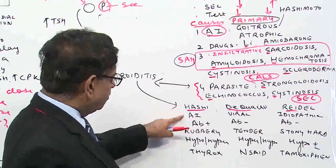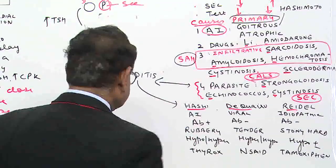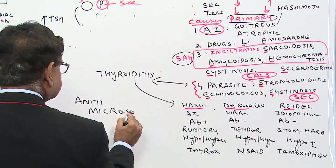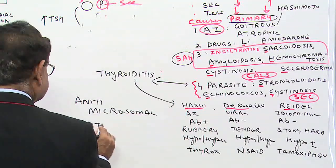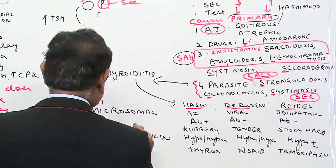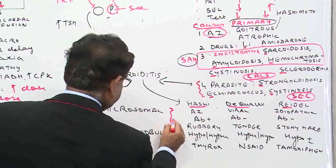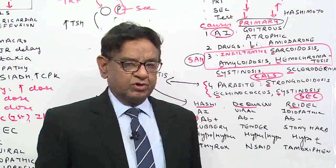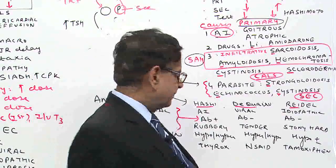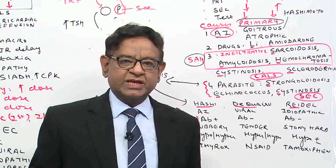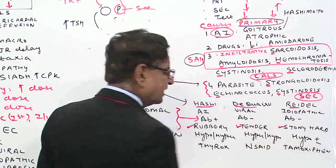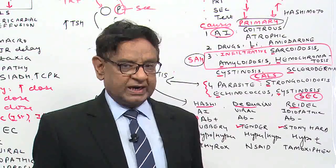Since Hashimoto's is autoimmune, there are autoantibodies — specifically anti-microsomal and anti-thyroglobulin antibodies. In De Quervain's (viral) there are no autoantibodies. If you palpate the thyroid gland, in Hashimoto's it is rubber-like; in De Quervain's it is tender; and in Riedel's thyroiditis it is stony hard — just like cancer.